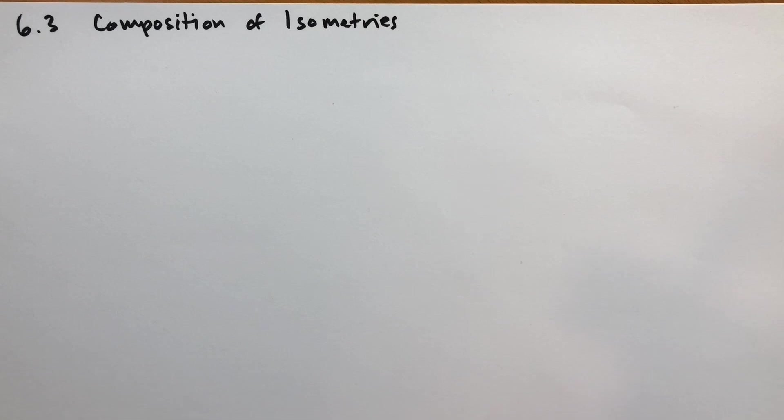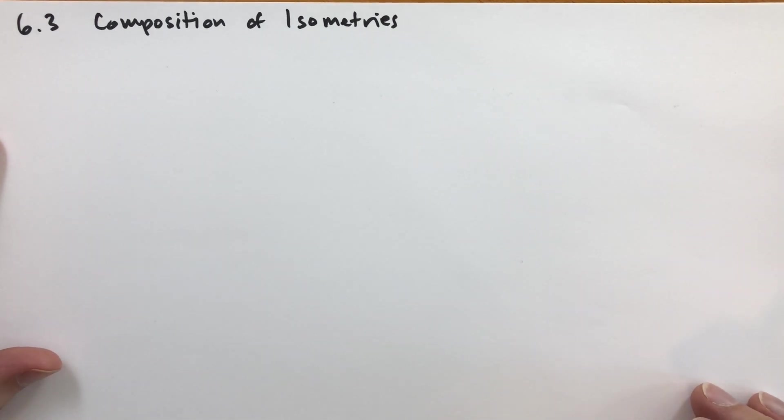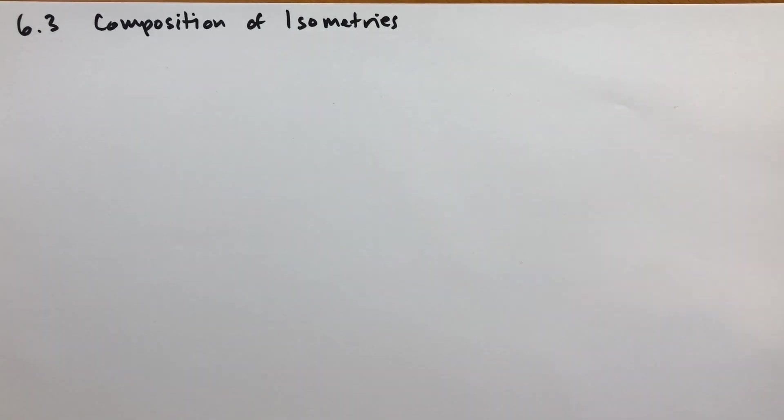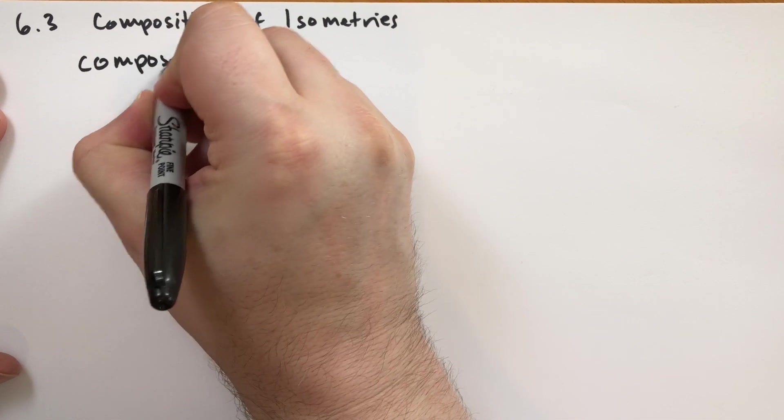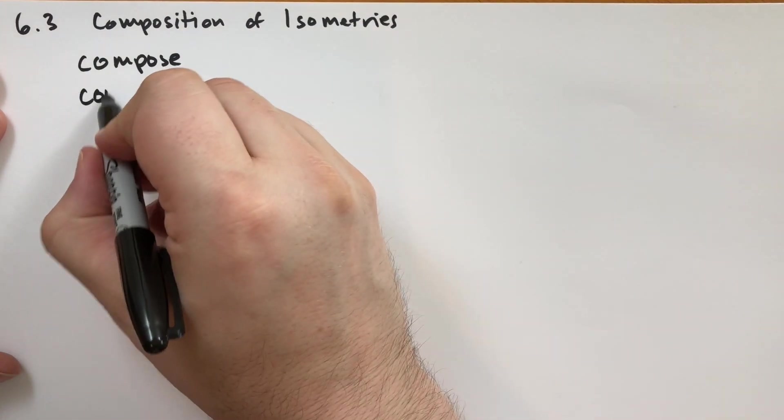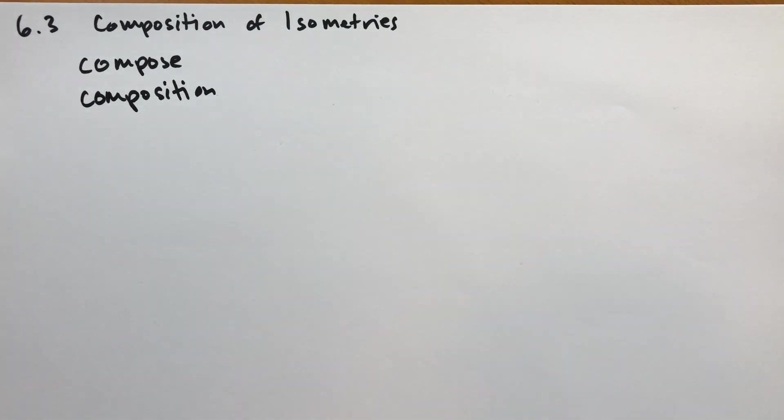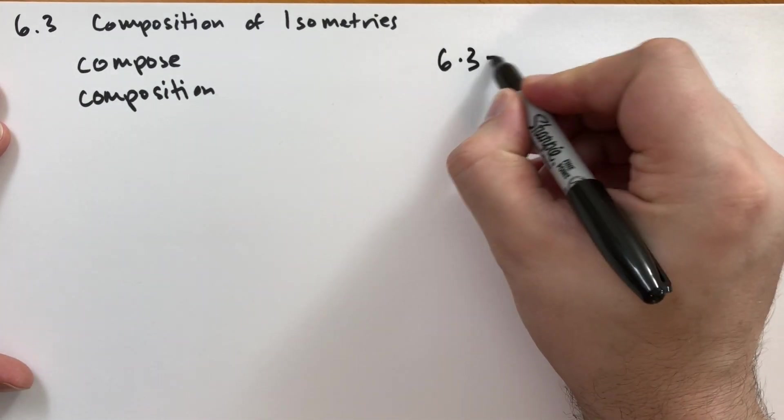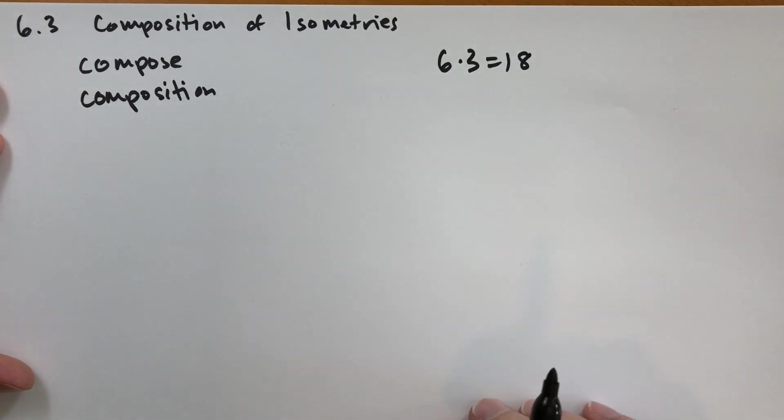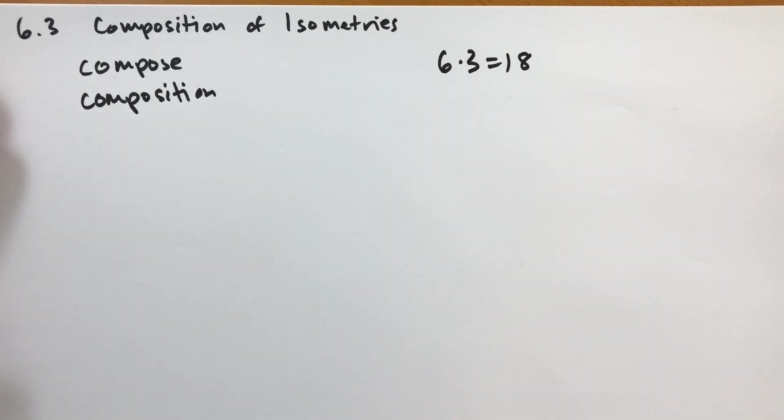In section three we're going to talk about how you can take isometries and put them together and create new isometries. His example in the first paragraph here talks about taking isometries in succession, one after the other. Such an isometry is composed of several parts. That's a word that we're going to use. Compose means to take different things and put them together. A composition is something that is built from many parts.